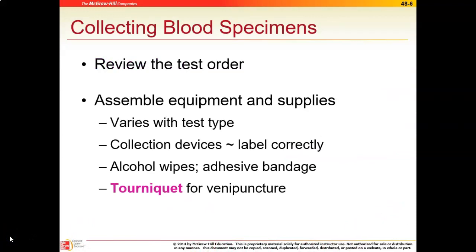When collecting blood samples, one of the first things to do is review the test order. You always want to make sure you know what you're ordering and check if there are any pre-test orders that need to be done. Sometimes you have to reschedule patients if they haven't followed through with appropriate pre-test orders. Assemble your equipment appropriately — make sure you have everything you need but not too much, and be aware that equipment and supplies will vary depending on what kind of test you're doing.